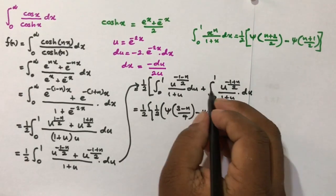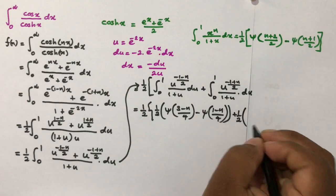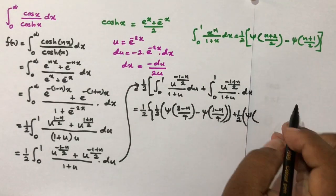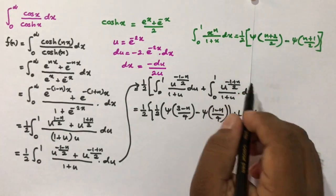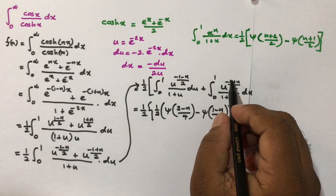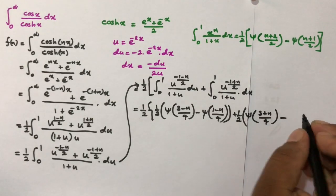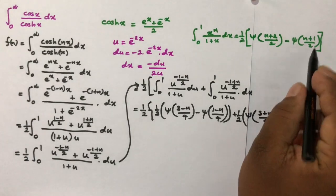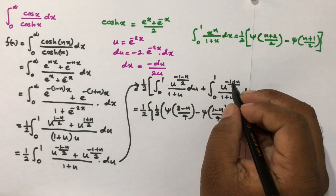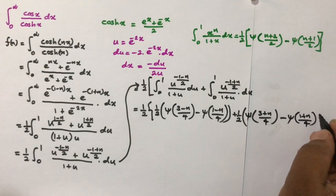For the second integral, applying the same formula gives (1/2)[digamma((3+n)/4) - digamma((1+n)/4)].